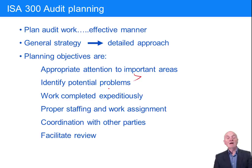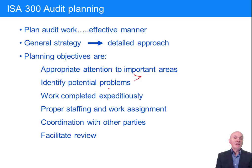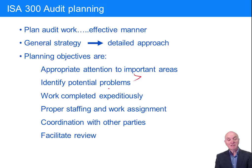Fourth planning objective: proper staffing and work assignment — two things. First, how many staff, determined by the size of the client and how many branches, factories, and warehouses they have. Second, what skills the staff need. In a simple audit, very junior staff can do it; in complicated audits you need more skilled staff. Ideally, the team includes someone who was there last year and has moved up a notch this year, knowing a little bit about the client.